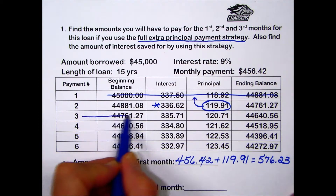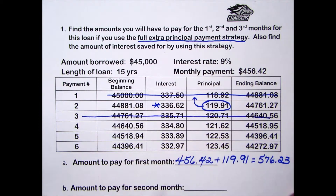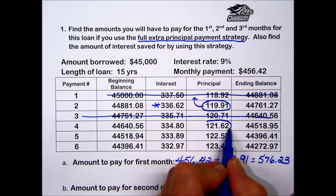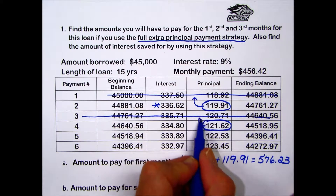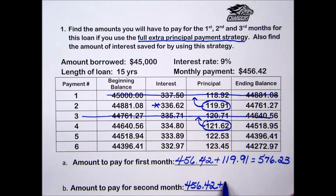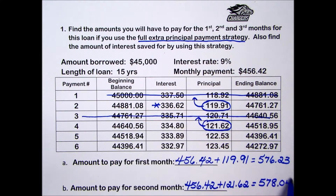When a monthly payment is made for the second month, $456.42, we're on line three. If we use the full extra principal payment strategy, that next full principal comes from line four — we will add an additional $121.62 onto our payment for a total of $578.04.